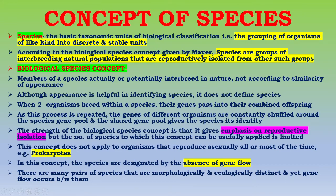According to the biological species concept, which was given by Mayr, he defined the term species very well. According to him, species are groups of interbreeding natural populations that are reproductively isolated from other such groups.